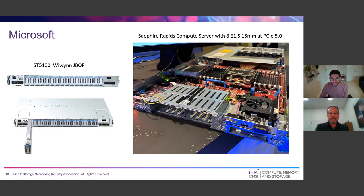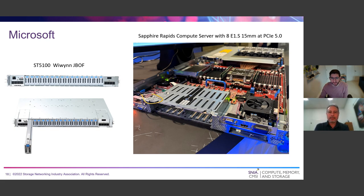The Microsoft compute node shows PCIe Gen 5 and the new CPU routing to eight drives — I believe it supports the 15 millimeter E1.S — and all PCIe Gen 5 slots. The interesting thing is this is not a specialty high-end server; this is the standard node for scale-out high-volume compute nodes. Yeah, it was really awesome to see E1.S be kind of the star of the show, front and center with the OCP NICs in this high-volume compute server.